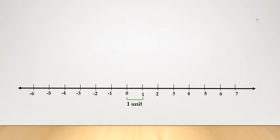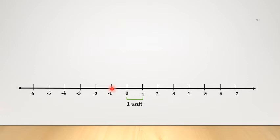On this number line, this point is 0. The distance from 0 to 1 is 1 unit, and the distance from 0 to 2 is 2 units. In the same way, on the left side, from 0 to minus 1 is also 1 unit. Similarly, all numbers marked on the number line are at equal distance.